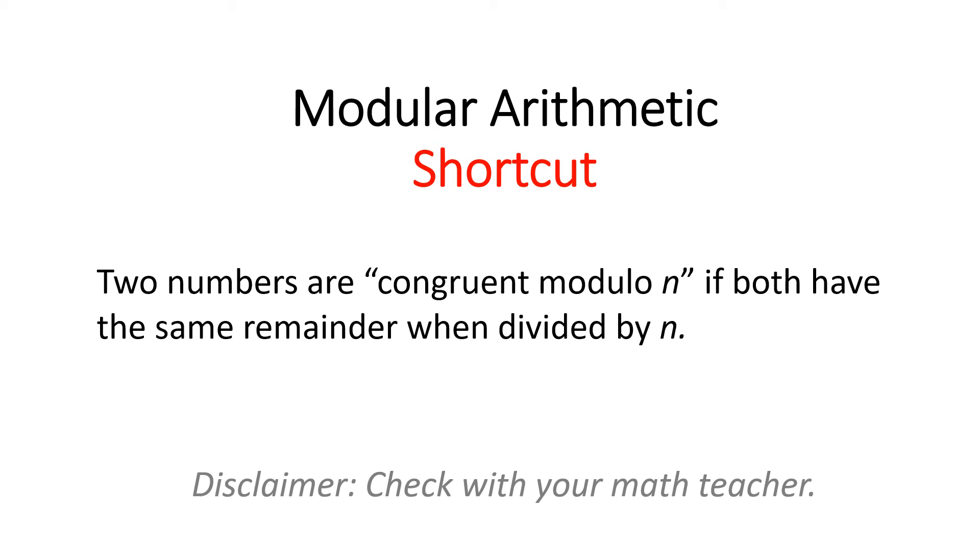Two numbers are congruent modulo n if both have the same remainder when divided by n. That's the essence of basic modular arithmetic. I'm going to show you a quick shortcut.